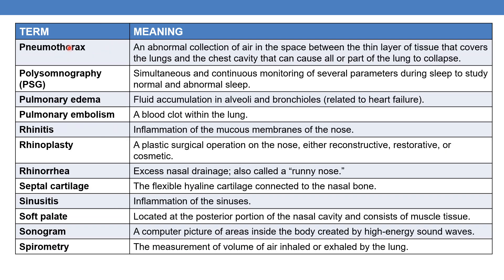The next term is pneumothorax — an abnormal collection of air in the space between the thin layer of tissue that covers the lungs and the chest cavity, that can cause all or part of the lung to collapse. The next term is polysomnography (PSG) — simultaneous and continuous monitoring of several parameters during sleep to study normal and abnormal sleep.